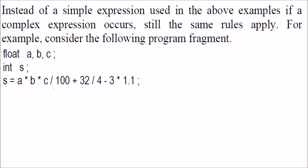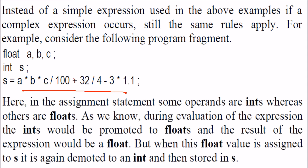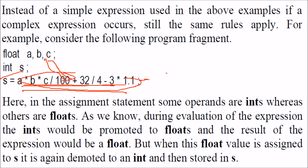This rule applies to any expression as well. If we have an expression where a, b, c are integers but the result is assigned to a float variable s, whatever integer result comes is fine. But if the expression with float values yields something like 8.36, only the 8 will remain; the 0.36 will be truncated because s is an integer.